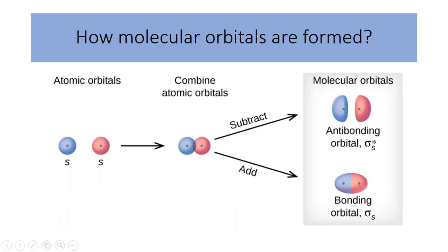How are molecular orbitals formed? As two atoms approach each other, their electron orbitals begin to overlap. This overlap forms a molecular bond between the two atoms with its molecular orbital shape. These orbitals follow the Pauli exclusion principle in the same way as atomic orbitals — no two electrons in an orbital can have the same quantum state. If the original atoms contain electrons where a bond would violate the rules, the electron will populate the higher energy antibonding orbital.